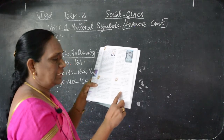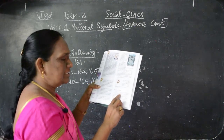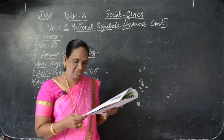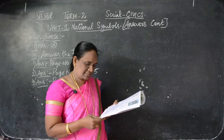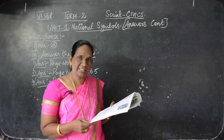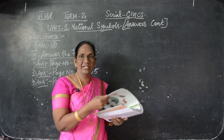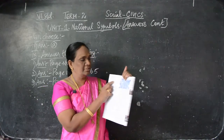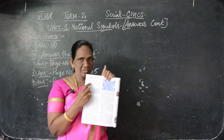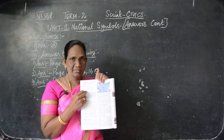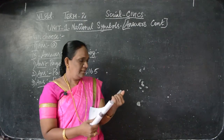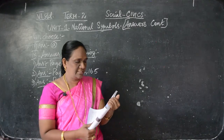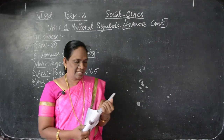Janaganamana symbolizes the sovereignty and integrity of our nation. This anthem was written by Rabindranath Tagore in Bengali. It was transcribed in Hindi and was accepted by the Constituent Assembly on 24th January 1950. The rules to be observed while singing the anthem — you have to write these three points: this anthem has to be sung in a duration of 52 seconds; everyone should stand erect while singing the national anthem; one should understand the meaning.